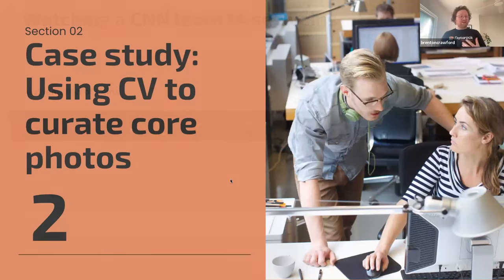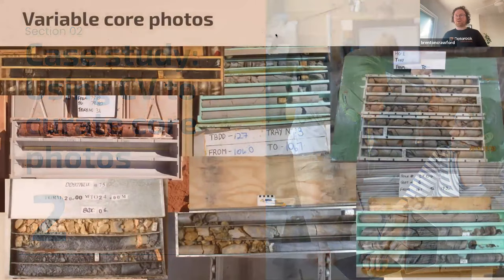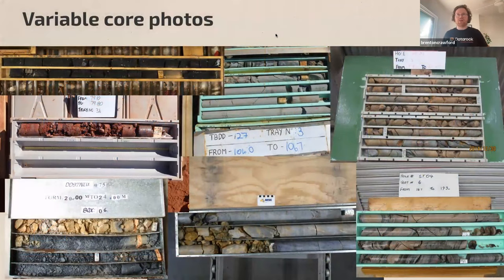That's the end of the theory section. Next we'll apply these computer vision models to typical core photos you'd get in industry, which can be quite variable, and try to turn a raw image into an analytics-ready image for data science. Here are examples of core photos — lots of different box types, different configurations, different countries doing things differently, some photos taken outside, some inside.